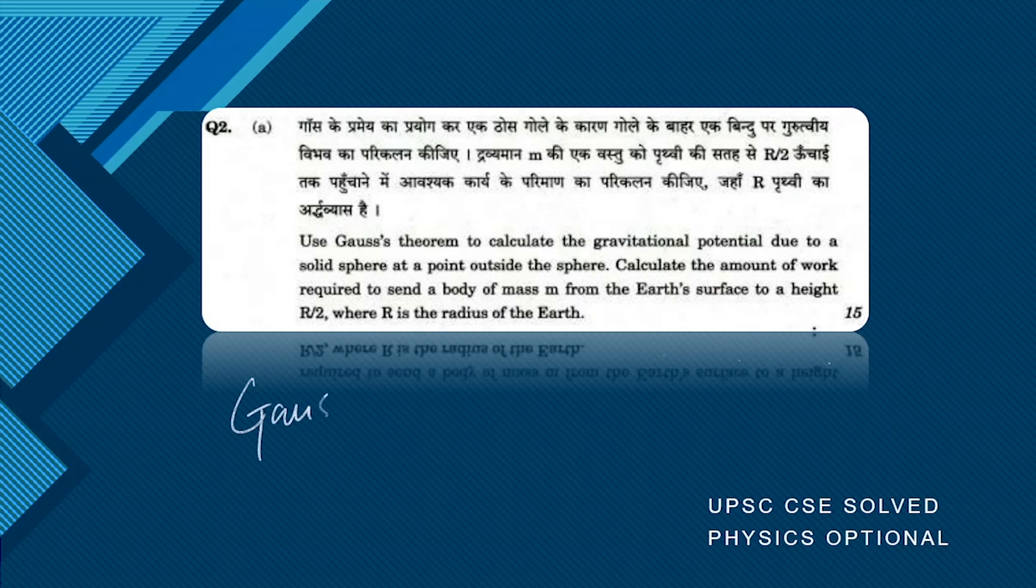Firstly, we should know the Gauss law for gravitation. So let's see the law first. It is given by the closed integral of the gravitational field dot dS, and this equals 4πGM, where M is the mass of that particular object that is producing that field.